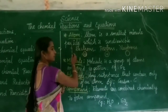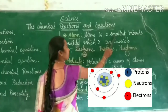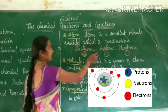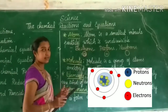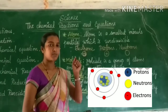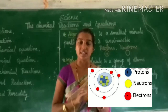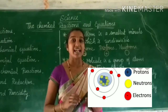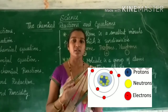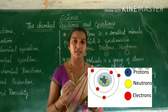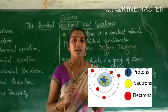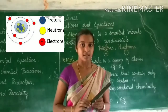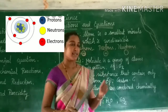Atom — an atom is the smallest particle which is indivisible. Atom is the smallest minor particle which cannot be divided further. It is indivisible and we cannot see it with our naked eye.